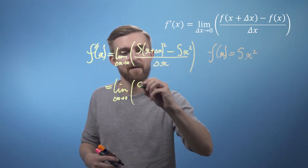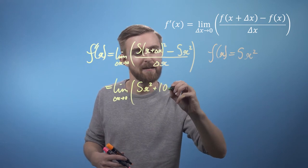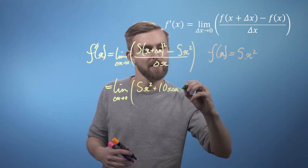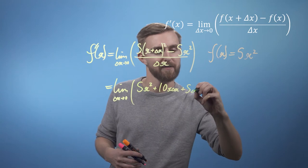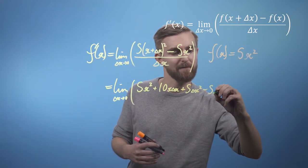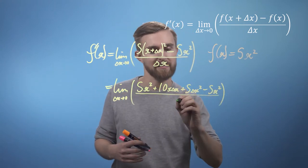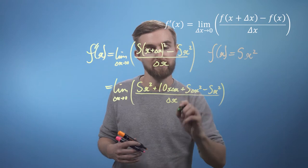So, which means we're going to get 5x squared plus 10x delta x plus 5 delta x squared. Once again minus our 5x squared here. And all of that is divided by delta x.